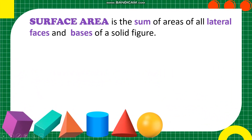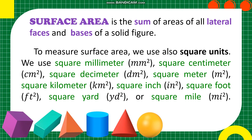What is Surface Area? Surface Area is the sum of areas of all lateral faces and bases of a solid figure. To measure surface area, we use square units: square millimeter (mm²), square centimeter (cm²), square decimeter (dm²), square meter (m²), square kilometer (km²), square inch (in²), square foot (ft²), square yard (yd²), or square mile (mi²).